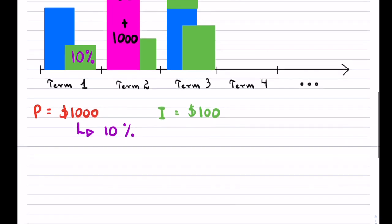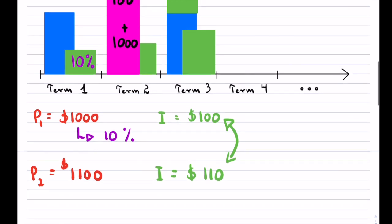And what happens now, our new starting point, so our new principal for term number two, because we've added them together, is this much. And now our interest, which is 10%, all of a sudden becomes $110. Notice that it's a little bit more, because our original interest now starts to earn money on top.